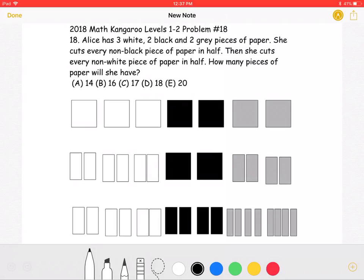Alice has three white, two black, and two gray pieces of paper. She cuts every non-black piece of paper in half. Then she cuts every non-white piece of paper in half. How many pieces of paper will she have?